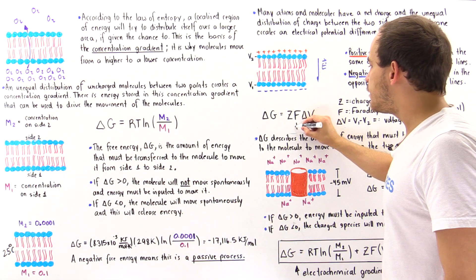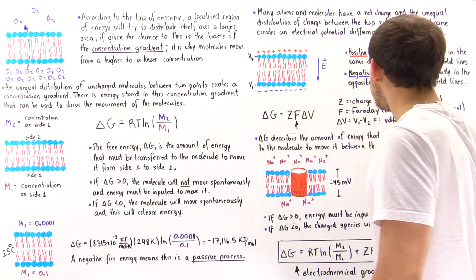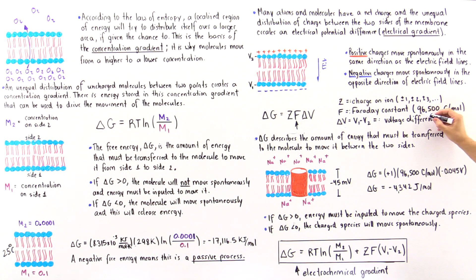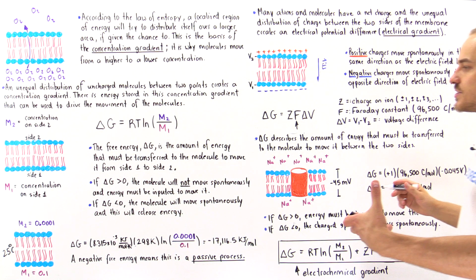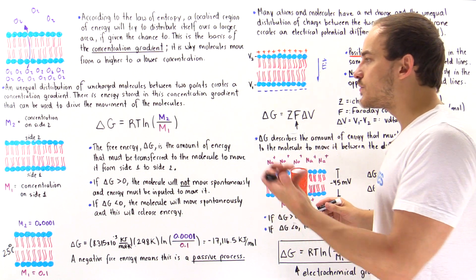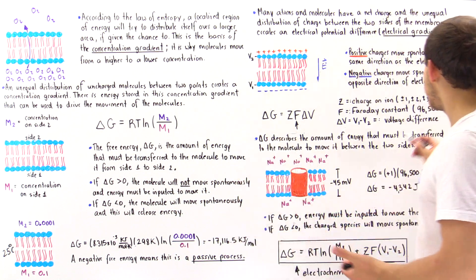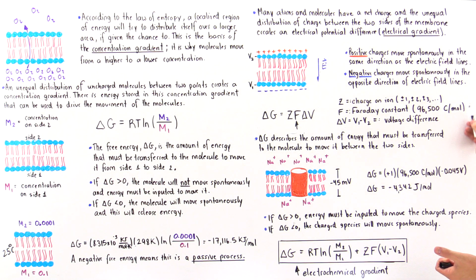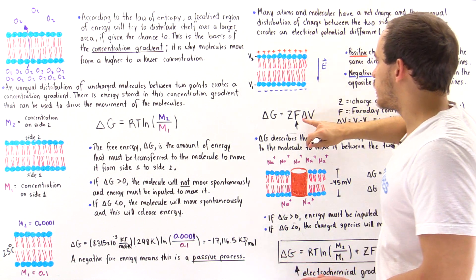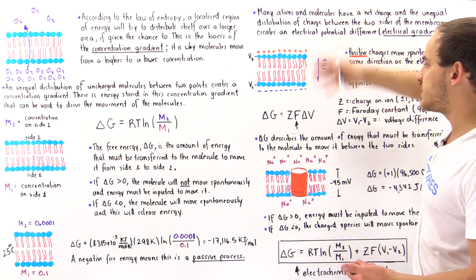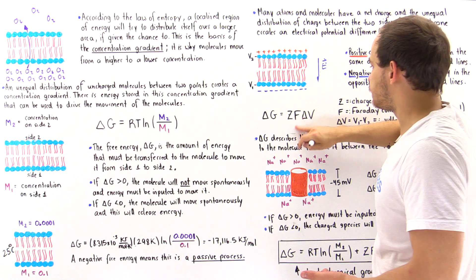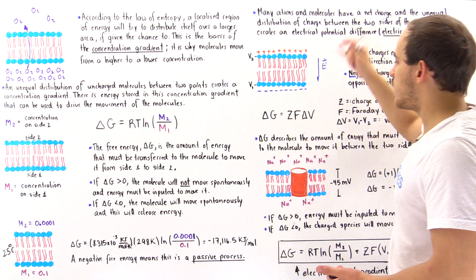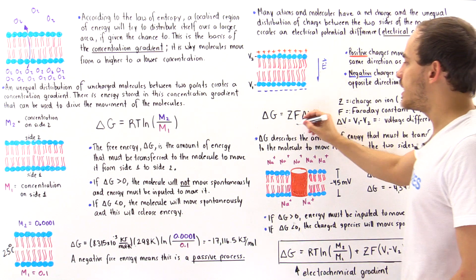This is Faraday's constant, so it's 96,500, and what it basically tells us is it's the amount of charge that exists on one mole of electrons as they move along that particular cell membrane.